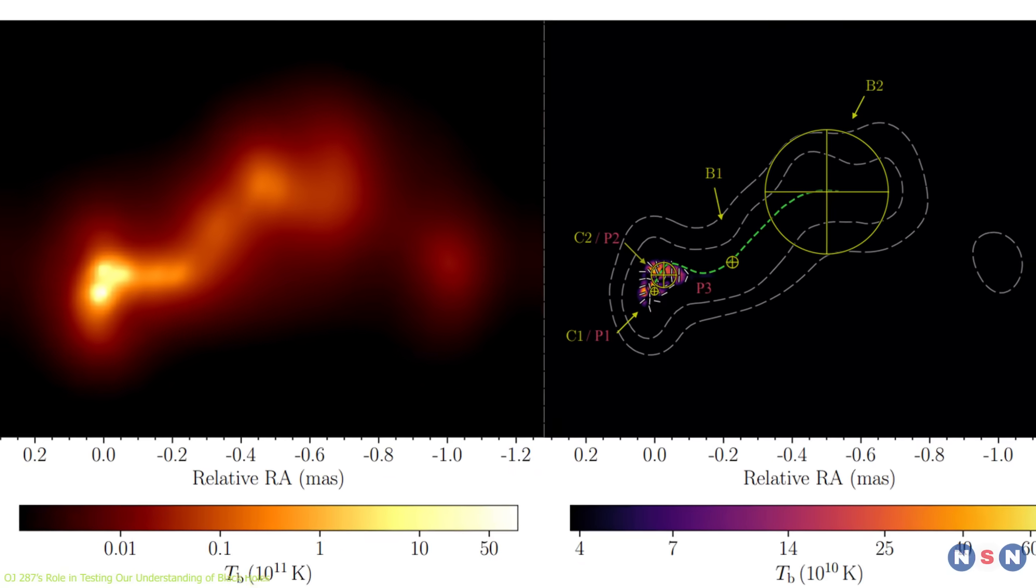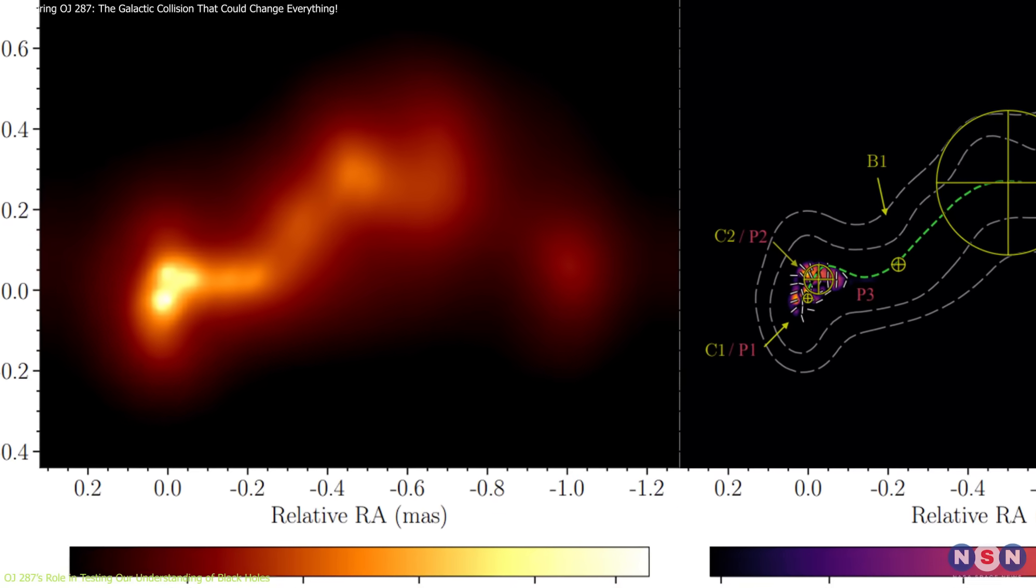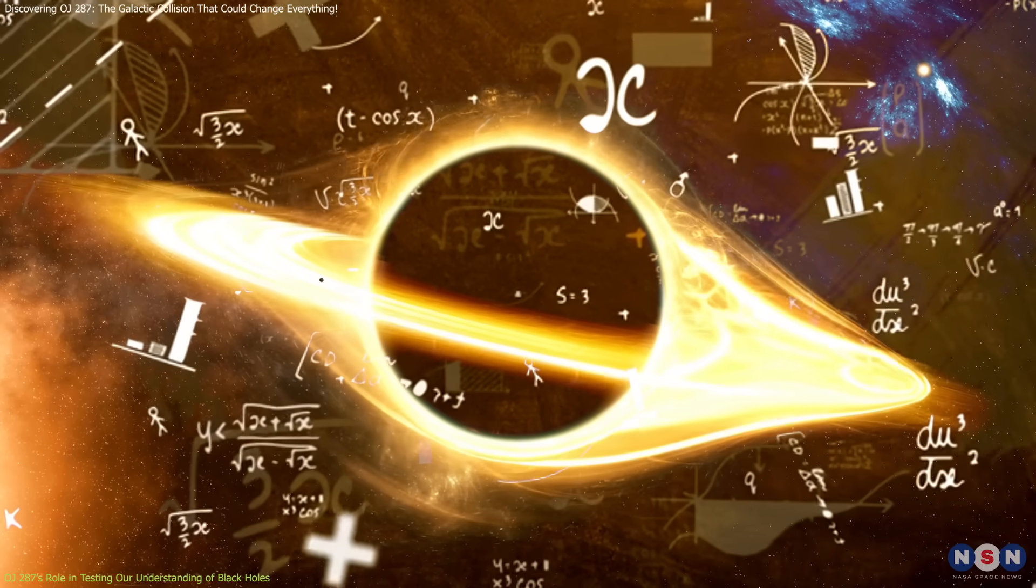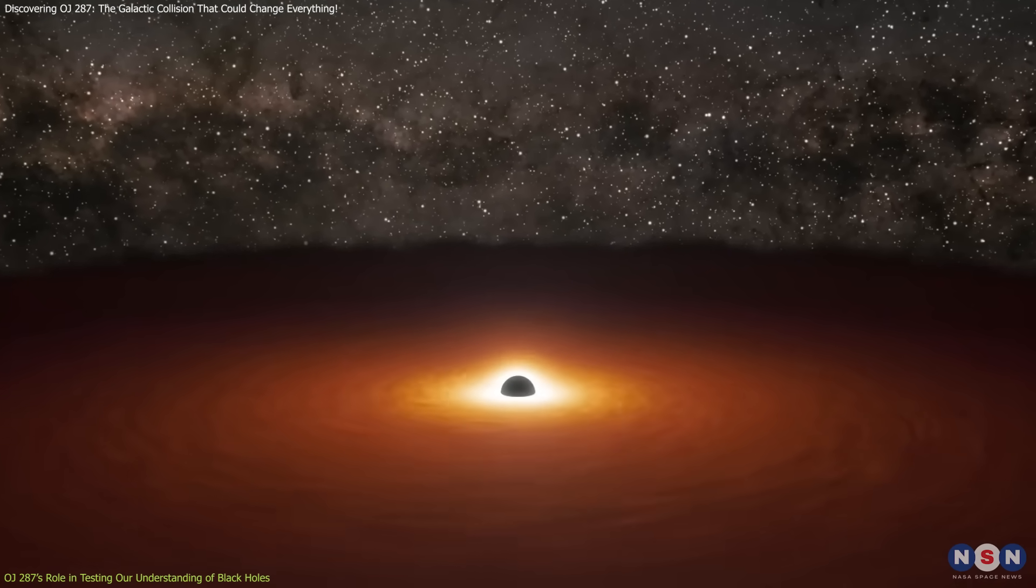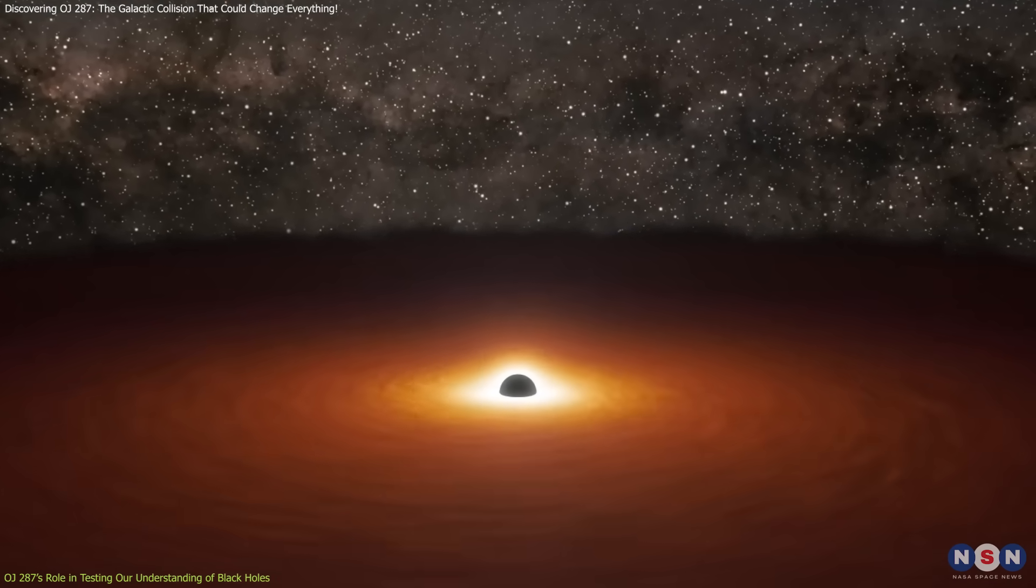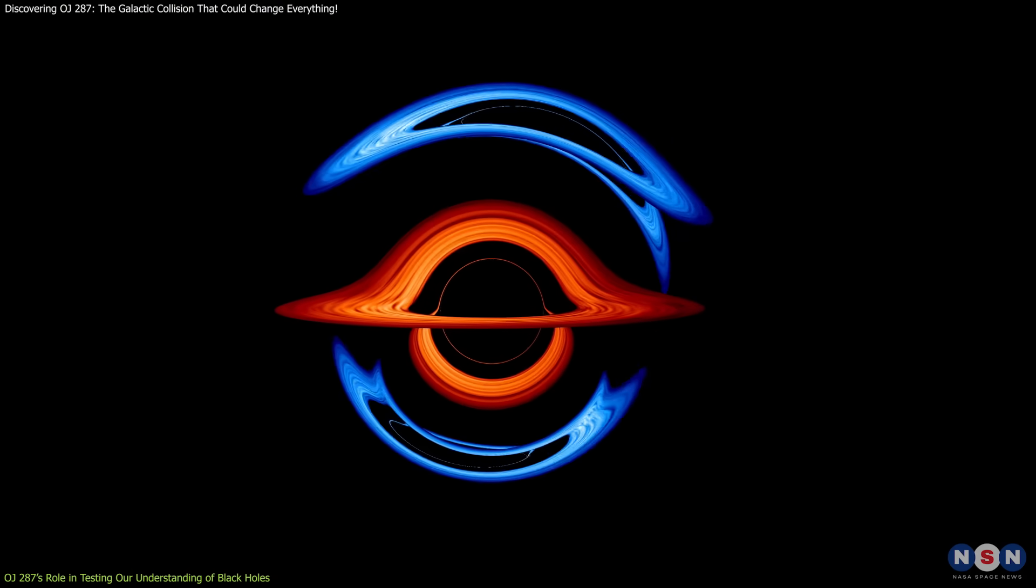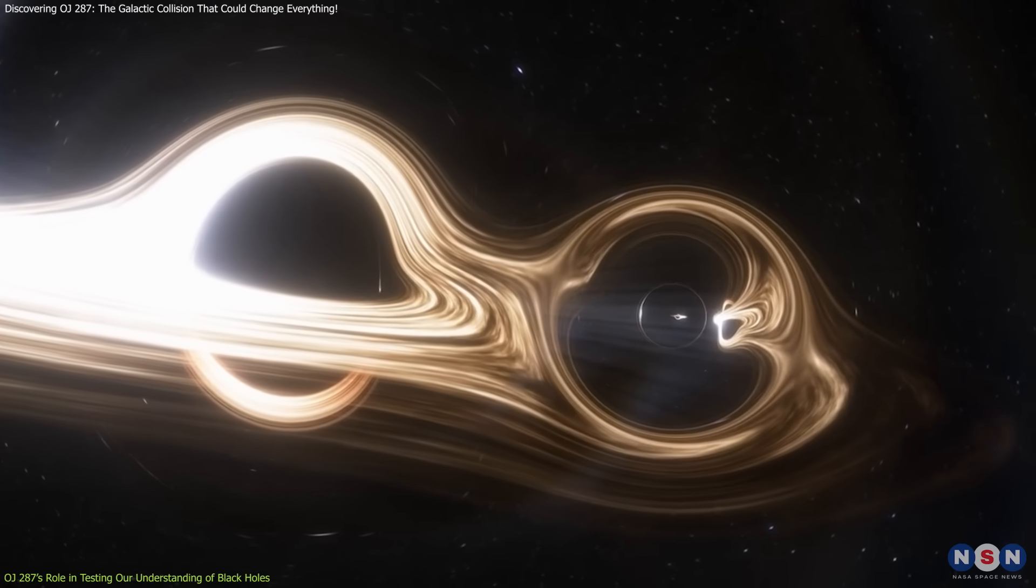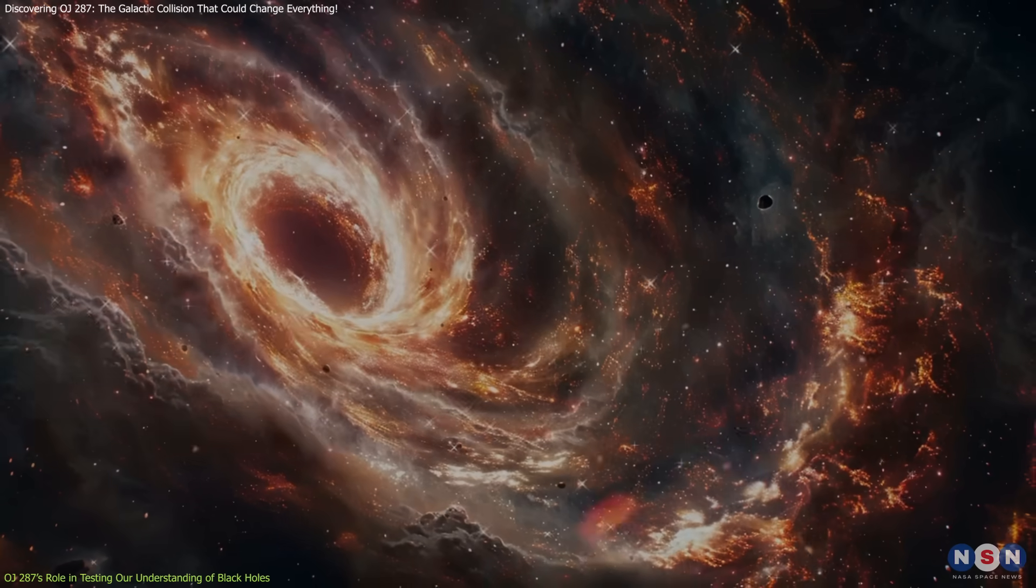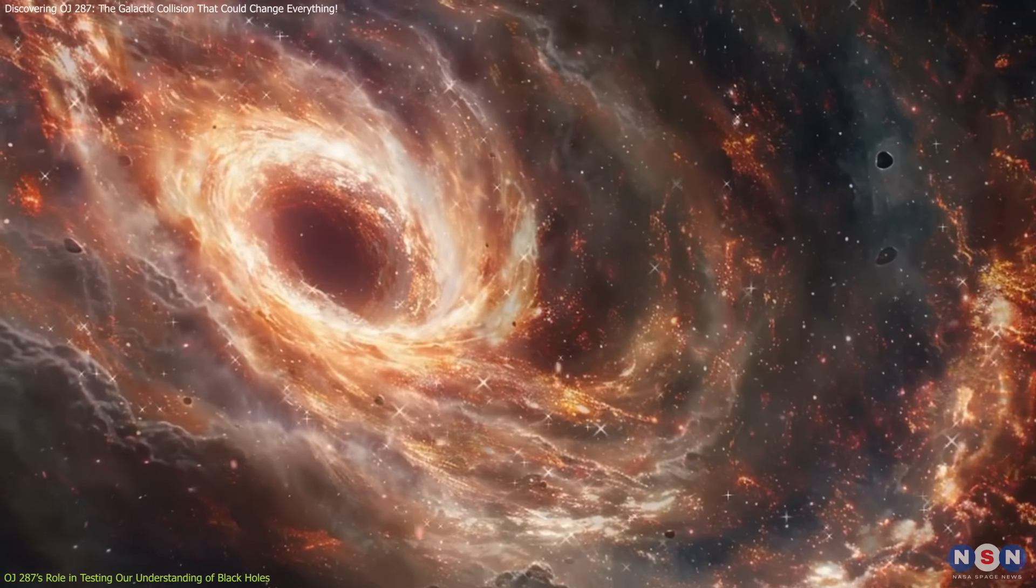OJ 287 offers a unique environment for testing key aspects of black hole physics. Its binary black hole system allows scientists to study the interaction between two supermassive black holes in a way that no other known system can. This is particularly important for understanding how these black holes grow, interact, and influence the galaxies around them.